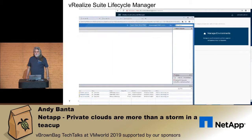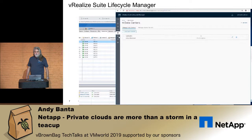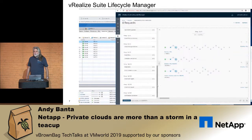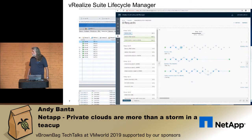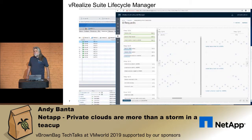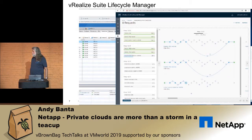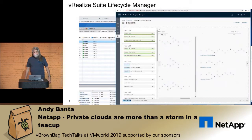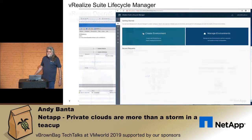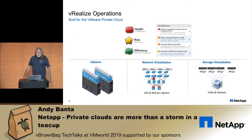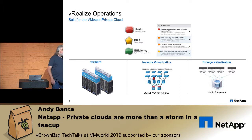Once the validation check is done, it only takes about 40 minutes to deploy all the components. Here we can see there are 13 different steps it's going to take. VMware shows these wavy lines to indicate progress — which makes no sense — but that's how you deploy the vRealize Suite.